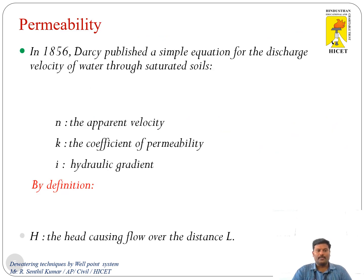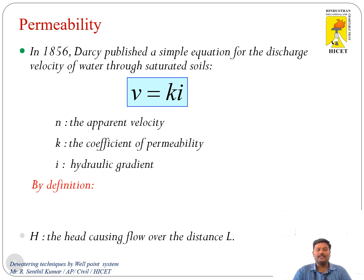In 1856, Darcy published a simple equation for the discharge velocity of water through saturated soil: v = k × i, where v is the apparent velocity and k is the coefficient of permeability. It can be determined using the constant head permeability test or variable head permeability test, either in the laboratory or in the field.